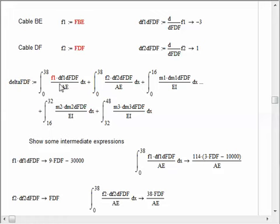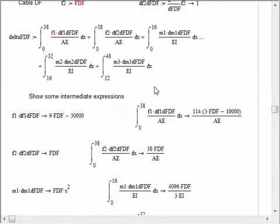Now, the deflection at the location of force FDF is the F times the partial of F with respect to the load over AE. So, F times partial over AE over the link. Then F2 times this partial over AE integrated over the link. Plus the first bending term, M1 times the partial of M1 with respect to FDF over EI. Plus the second moment term plus the third moment term. Now, what I'm going to do is pull each of these terms out and show you what they look like. So, F1 times the correct partial is 9 times FDF minus 30,000. And when that's integrated between the limits of 0 and 38, here's what we get.